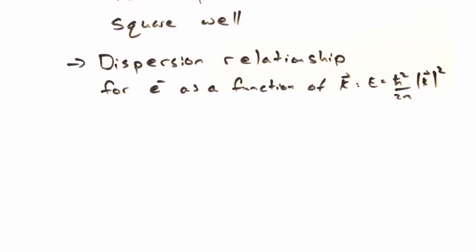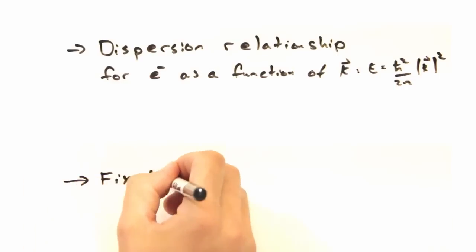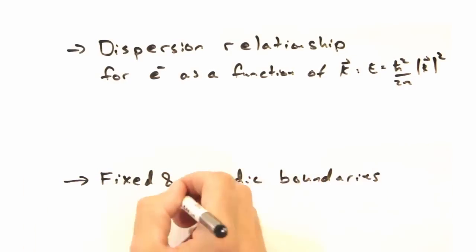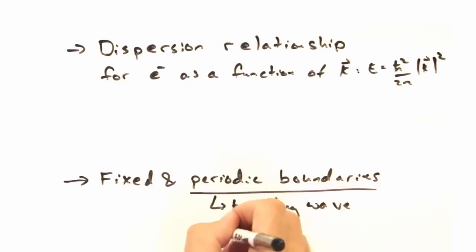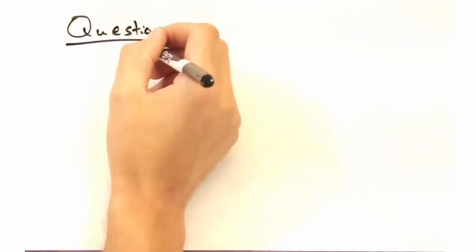Then we developed a dispersion relation for the electron as a function of its quantum number k. Although we developed a solution for the wave function using fixed and periodic boundaries, in this course we'll focus on periodic boundaries, and thus the traveling wave solution for psi.